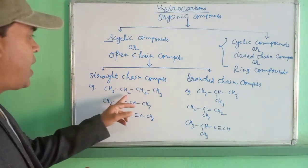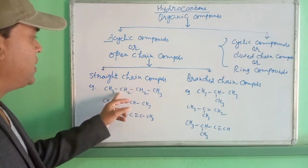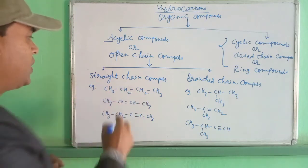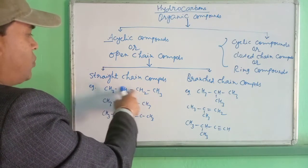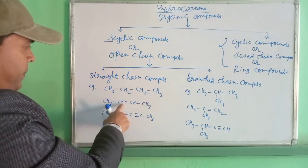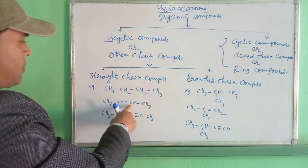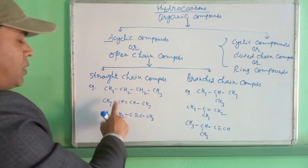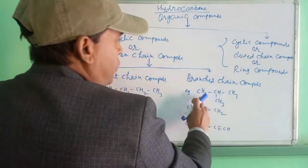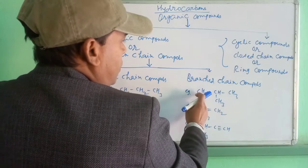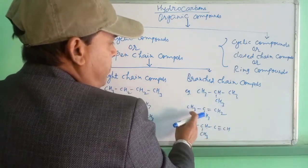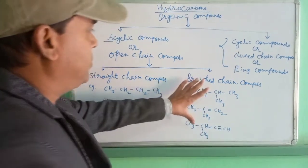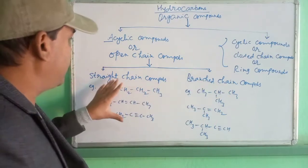Straight chain compound means no carbon atom is bonded with more than two other carbon atoms. In all three examples, you can see the carbon atoms bonded with a maximum of two carbons. But in the case of branch chain compound, you can see the central carbon bonded with three other carbon atoms — one, two, and three. Here also the central carbon is bonded with three other carbons, more than two. This is how you distinguish branch chain from straight chain compound.